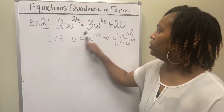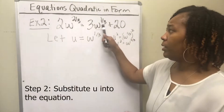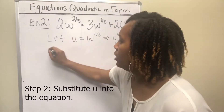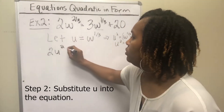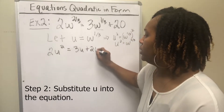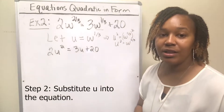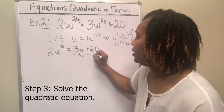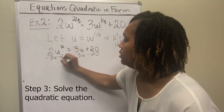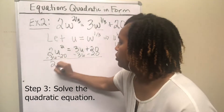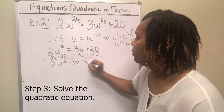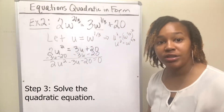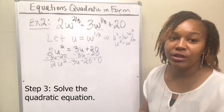We're going to replace w^(1/3) with u and w^(2/3) with u². So this equation becomes 2u² = 3u + 20, and now it looks like a quadratic equation. Moving the 3u and the 20 over, you get 2u² − 3u − 20 = 0. That's a quadratic equation. You can use the quadratic formula because it works every time, or you can try to factor.